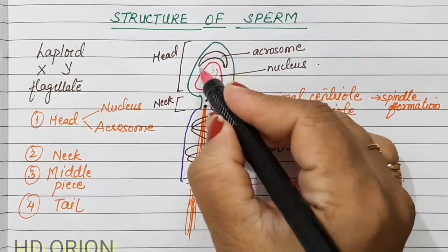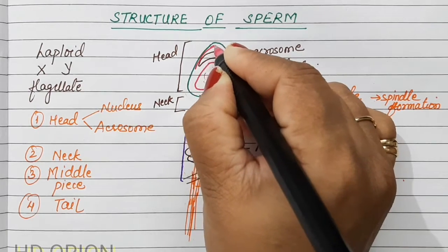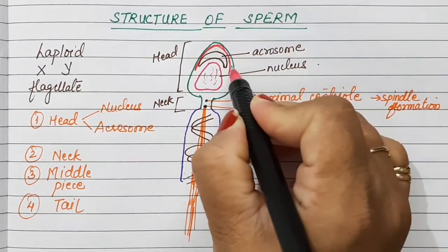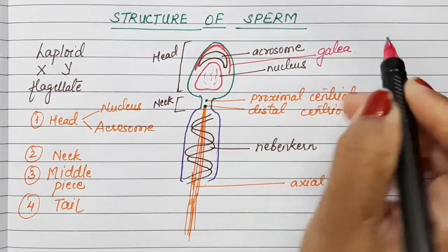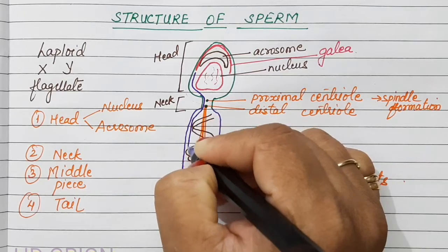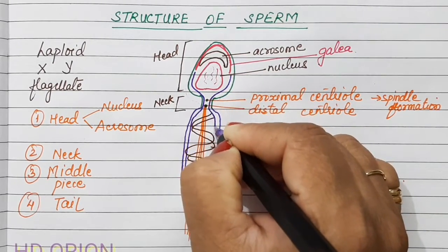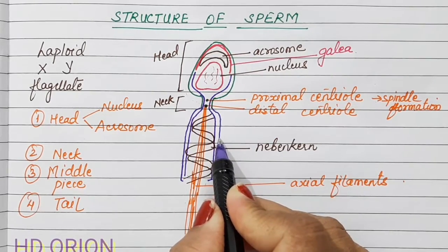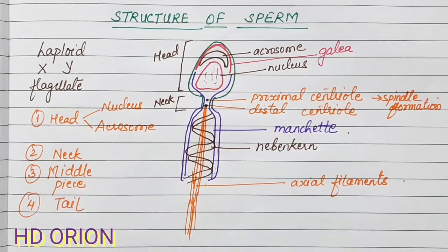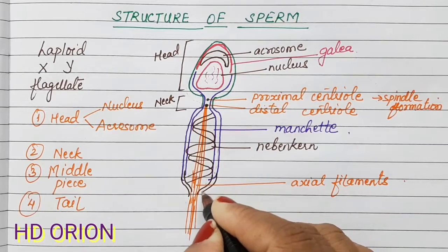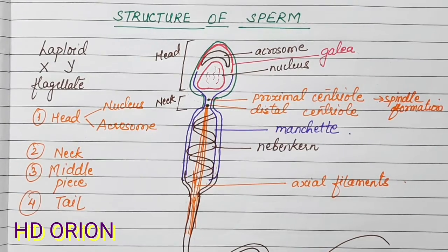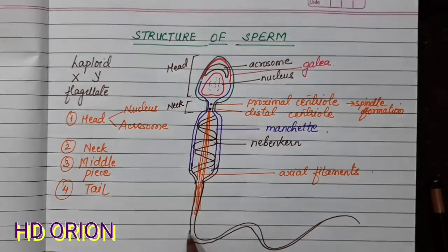Above the acrosome in the head region there is a layer called the galea, which shields the acrosome and extends to the nucleus. Another additional membrane inside the plasma membrane extends to the lower region and is known as the manchette. After that comes the very long tail, which is formed by the axial filaments and flagellates continuously to produce movement.